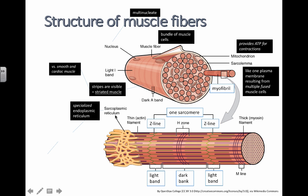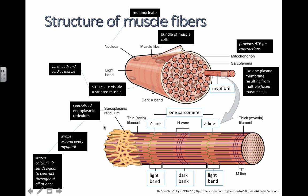The sarcoplasmic reticulum is a specialized type of endoplasmic reticulum. It wraps around every one of these myofibrils and stores calcium, sending signals and releasing calcium to allow muscle contraction to start. Calcium binds to troponin, which then activates tropomyosin — that moves out of the way so that myosin heads can actually bind onto actin. That's not going to make a lot of sense just listening to it, so make sure you watch the videos that show that.